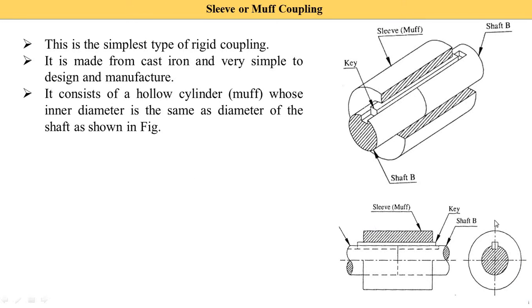This is the second diagram of a sleeve or muff coupling - the side view. If you see this 3D image from the side, there are two circles and one square - this square is the key. The front view shows when we view this diagram from this side. This is shaft A, this is shaft B, this is the key, and the outer part is the sleeve or muff.